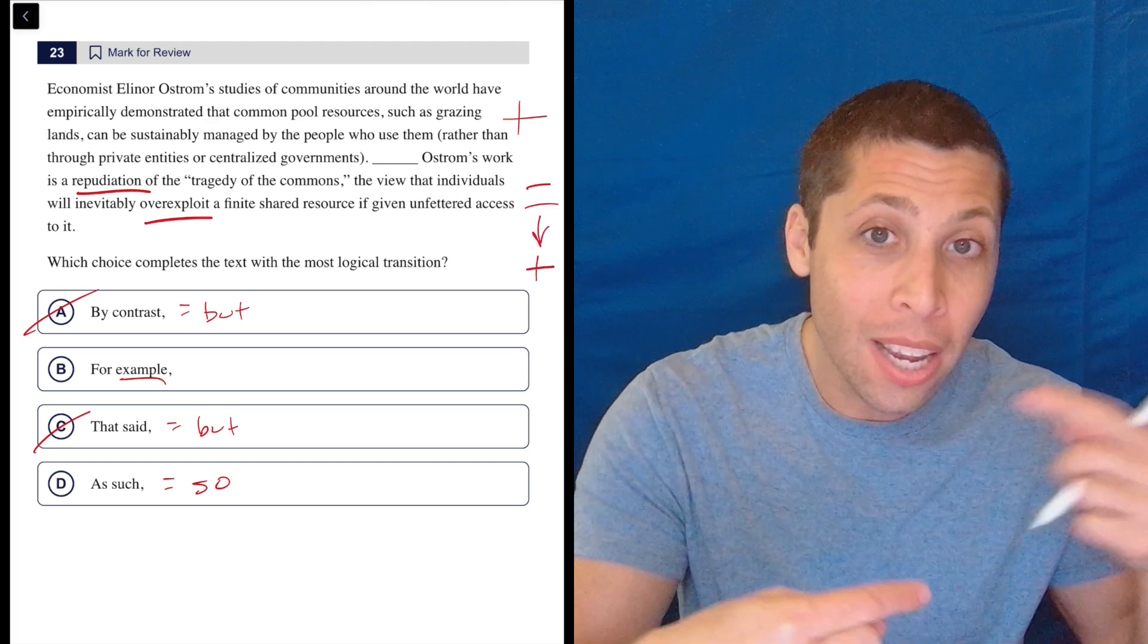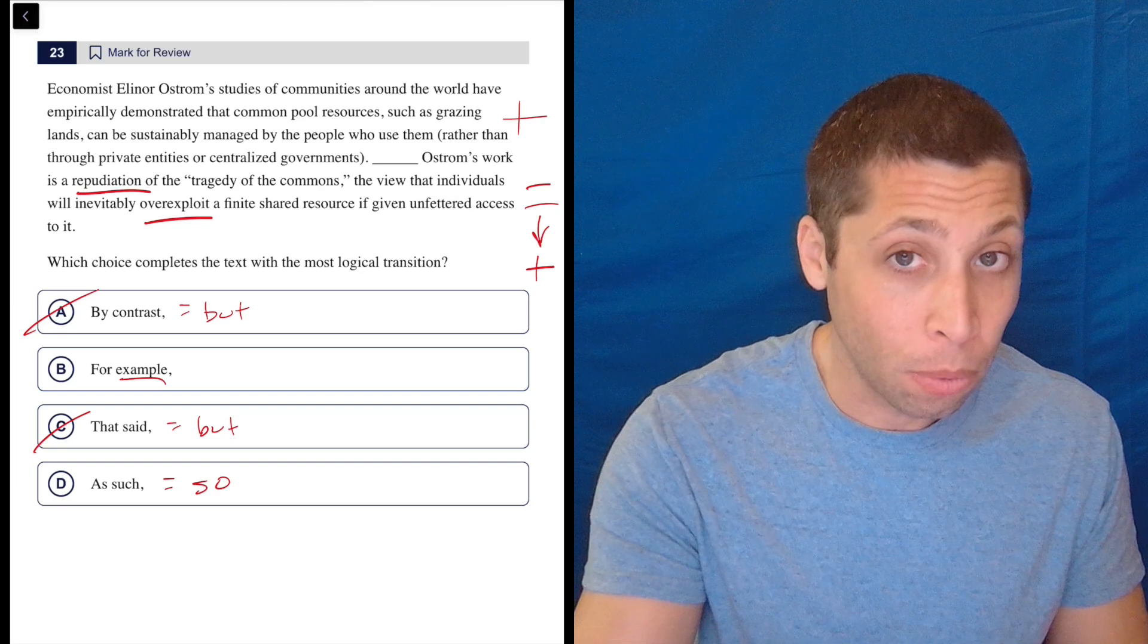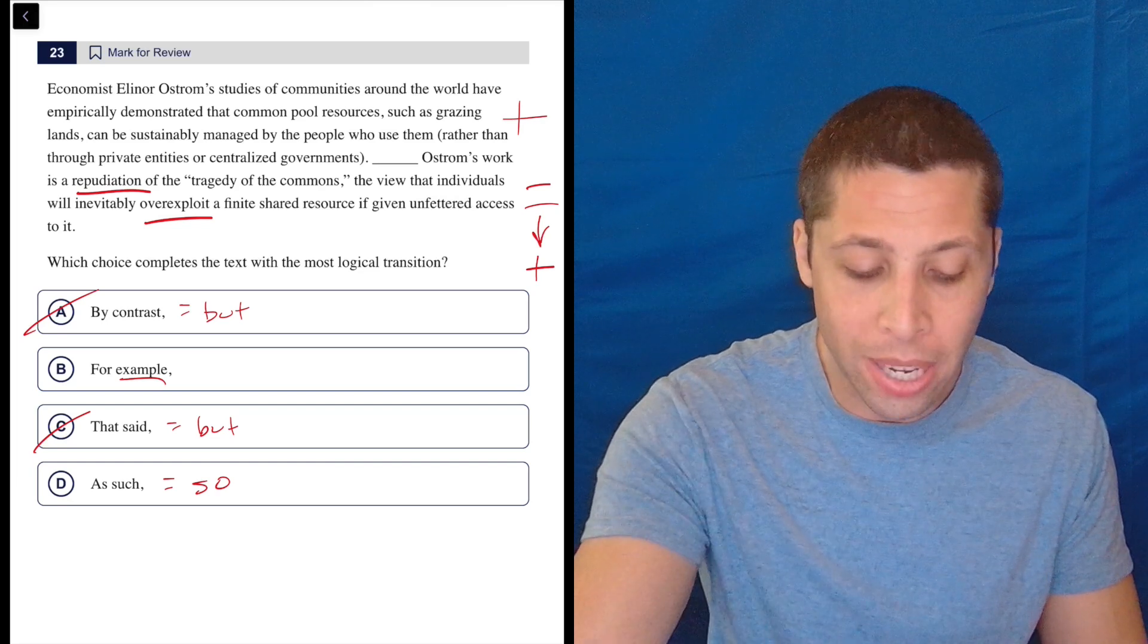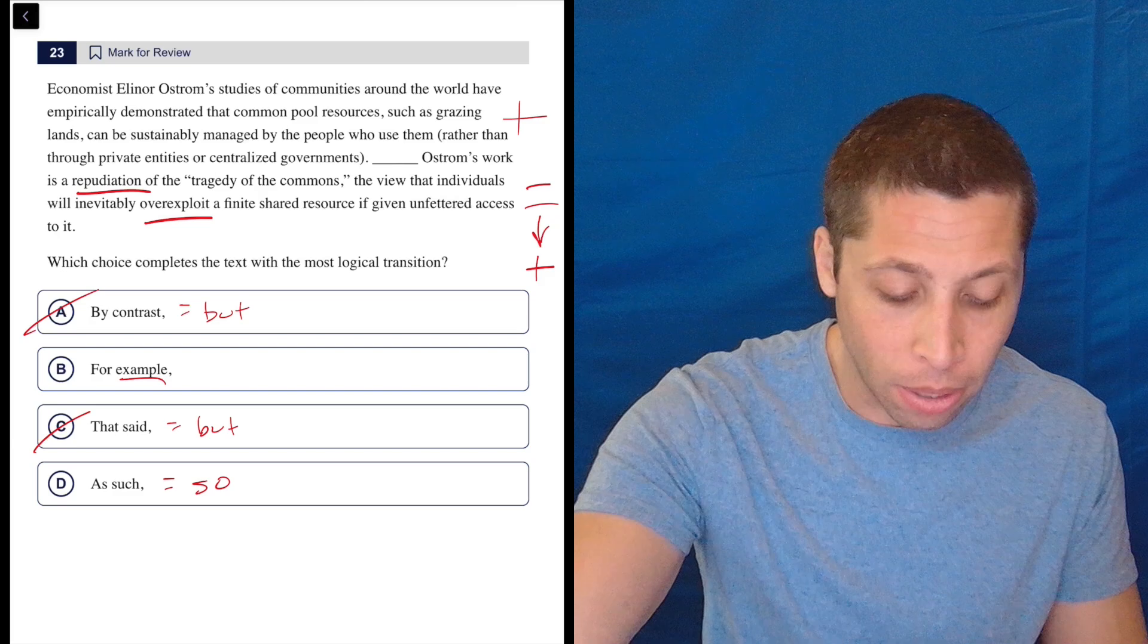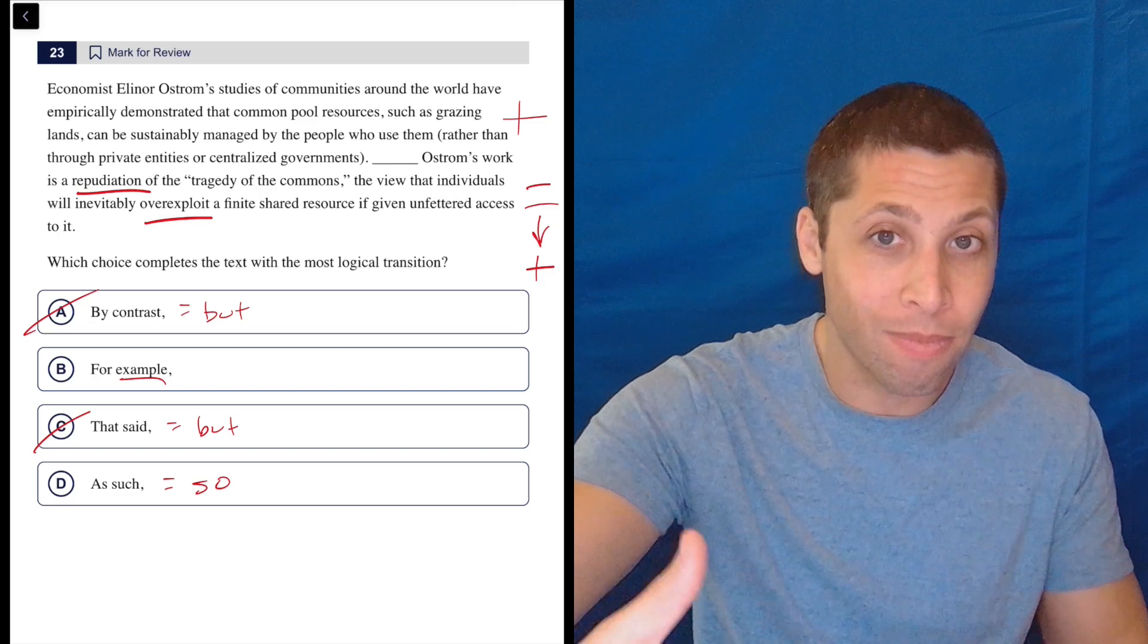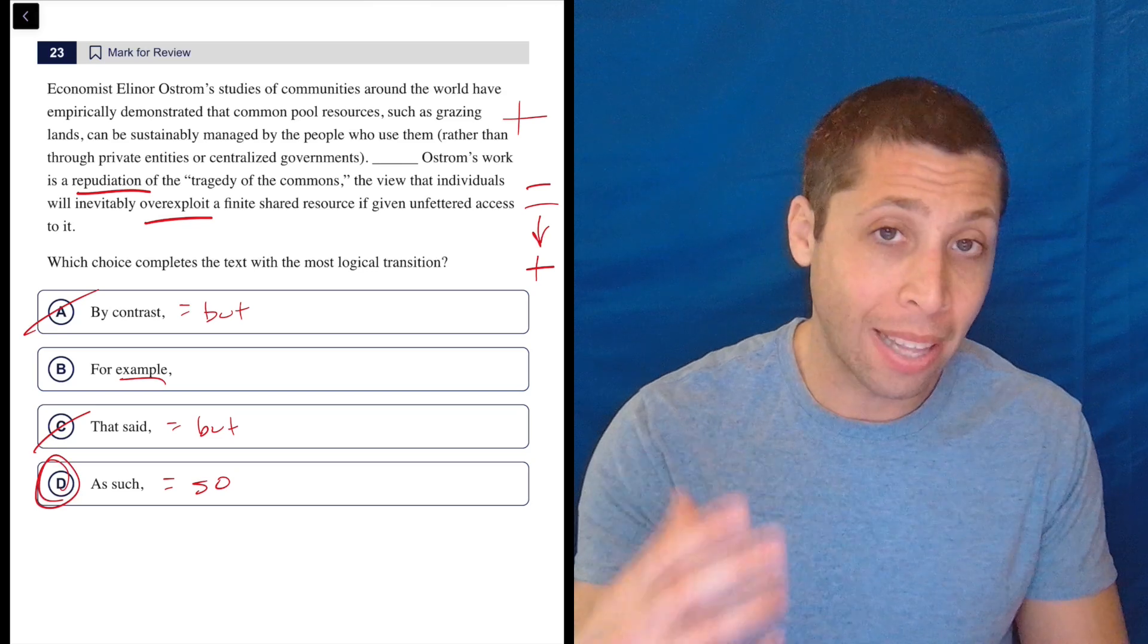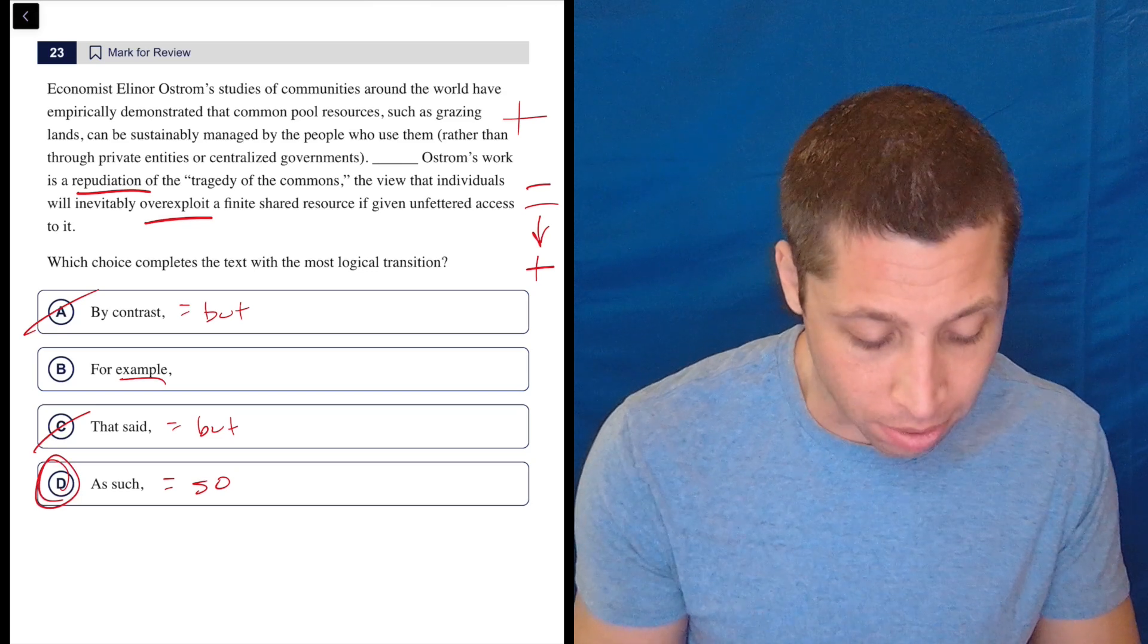They're saying she's repudiating this negative. So it's like a double negative. So it's actually a positive. So we're continuing an idea. It's not an example. Her work as a repudiation is not an example of the first thing. They are both the same example. They're just saying what she believes. So as such is perfect.